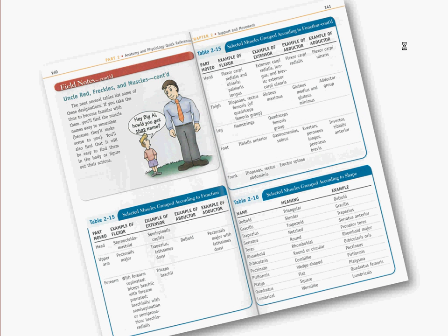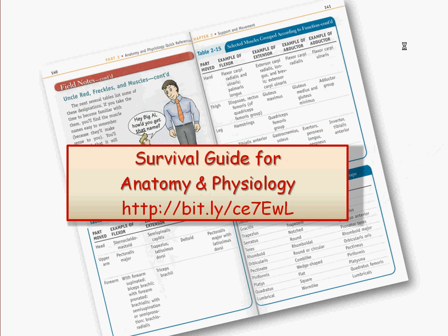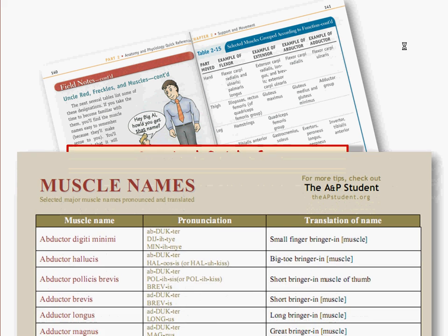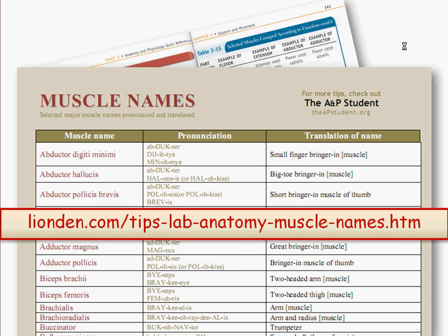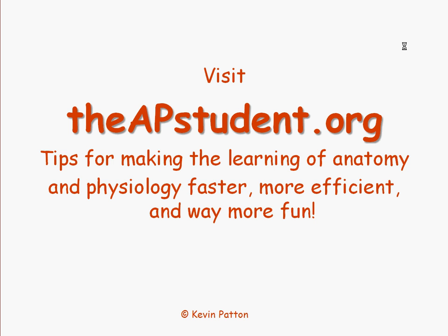Where are you going to learn all this stuff? Maybe you haven't taken a Latin class. I suggest the Survival Guide for Anatomy and Physiology — you can type the link into your browser to get a description of that book, where I not only explain how to do this but give you some tables on how to do the translation. A free resource you can download is my list of muscle names at lionden.com, which includes translations of major muscle names. That and other study tips are always available at my blog, theapstudent.org.